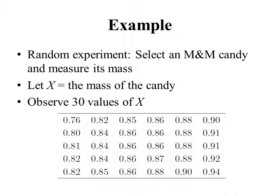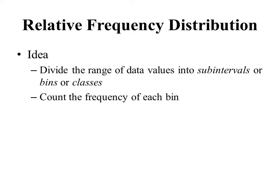To better understand this random variable x, suppose we observe 30 values by measuring the masses of 30 M&M candies and collect the data shown in this table. One candy weighed 0.76 grams, another weighed 0.82 grams, another 0.85 grams, and so on. To analyze this data, we're going to construct a relative frequency distribution by dividing the overall range into several subintervals, or bins, or classes — these three words all mean the same thing.